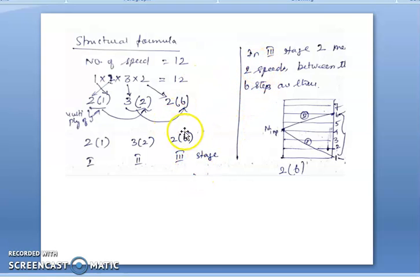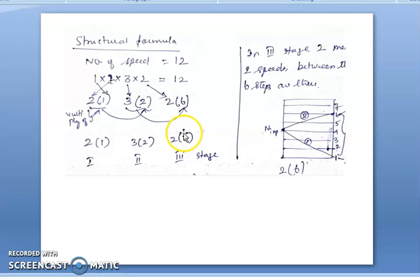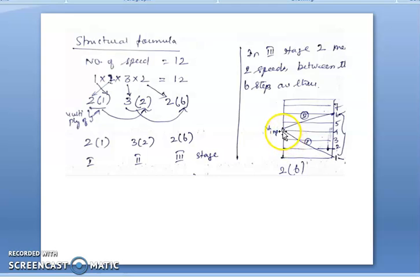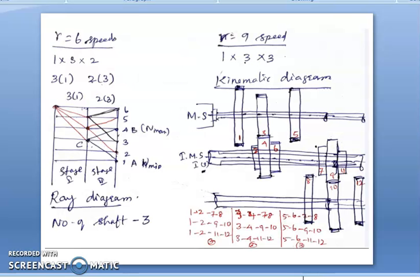In the third stage, the '2' outside the bracket means two different speeds, and the '6' within the bracket means there are 6 steps or 6 intermediate gaps between the two speeds. For example, in the last stage 2(6), one speed ray and a second speed ray have 6 intermediate steps between them: 1, 2, 3, 4, 5, 6. Using this arrangement of structural formula, we can draw the kinematic or ray diagram.